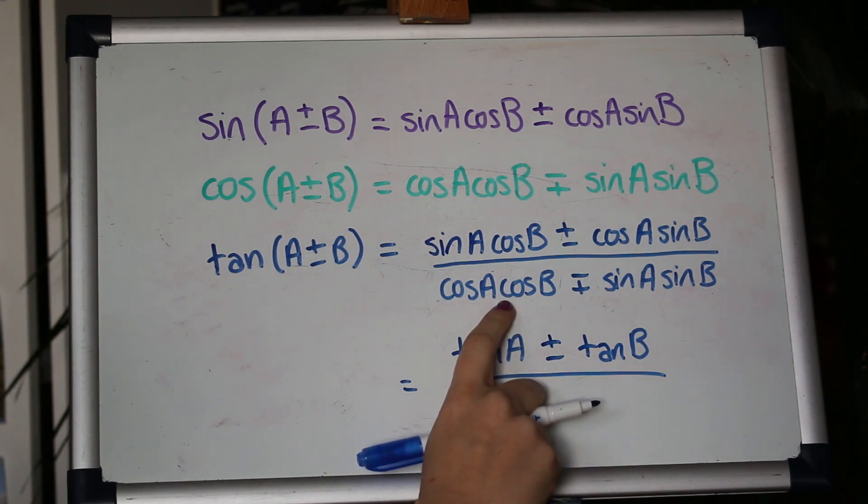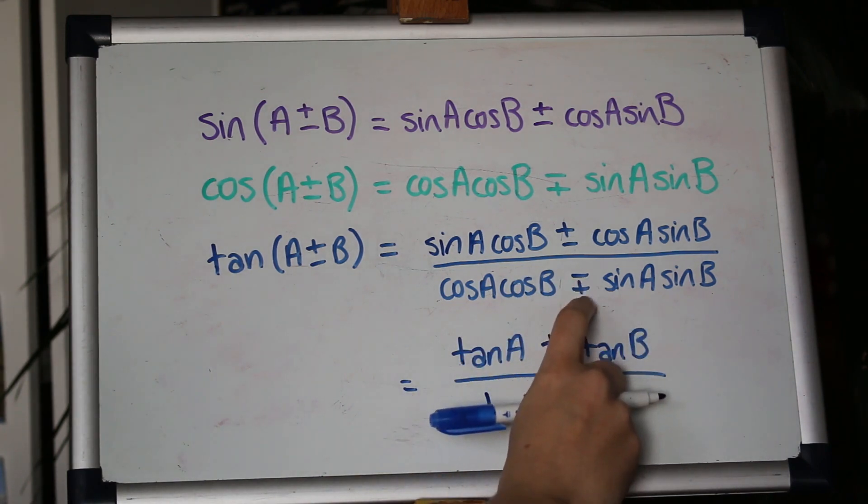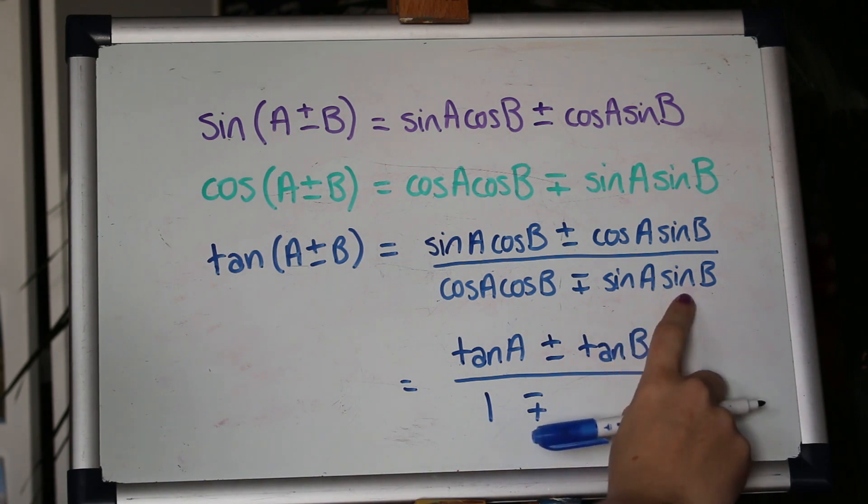We're dividing this entire term by itself so that will just be one and again these signs flip and they'll just do the same. This term here divided by cos a cos b will have tan a and tan b as well.